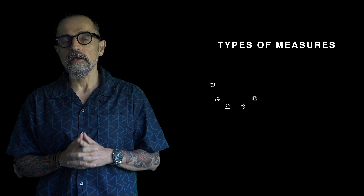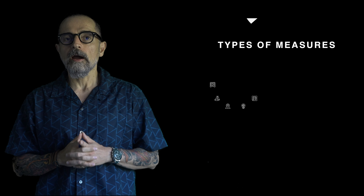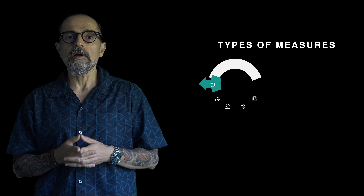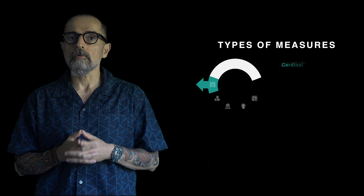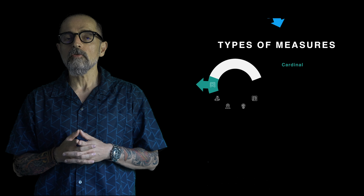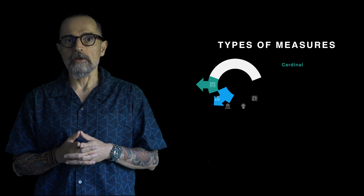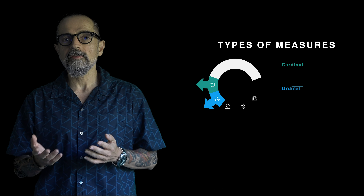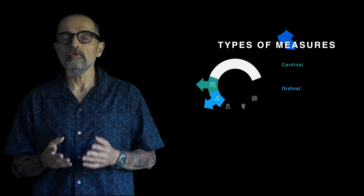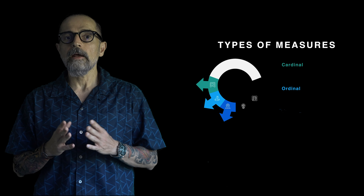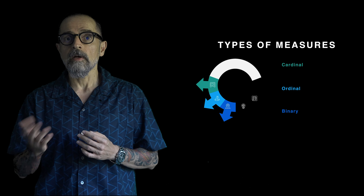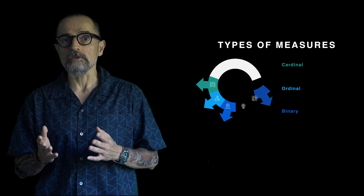You can use different types of measures with your indicators. You can use a cardinal measure — a number of absolute units — for instance, the number of participants in the training program. You can use an ordinal measure to assess, for instance, the level of satisfaction of participants. You can also use a binary measure, which means yes or no — for instance, the law has been approved by the Parliament or not.